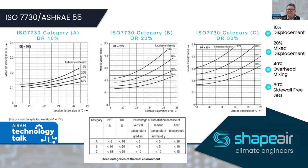10% turbulence intensity corresponds to a displacement system; 20% to a mixed floor swirl with induction and displacement; 40% to the majority of systems installed in Australia — mixed overhead systems with swirl, four-way, pattern, or perforated diffusers; and 60% turbulence intensity for something like sidewall registers. I'm going to concentrate on the 40% turbulence intensity for an overhead system.